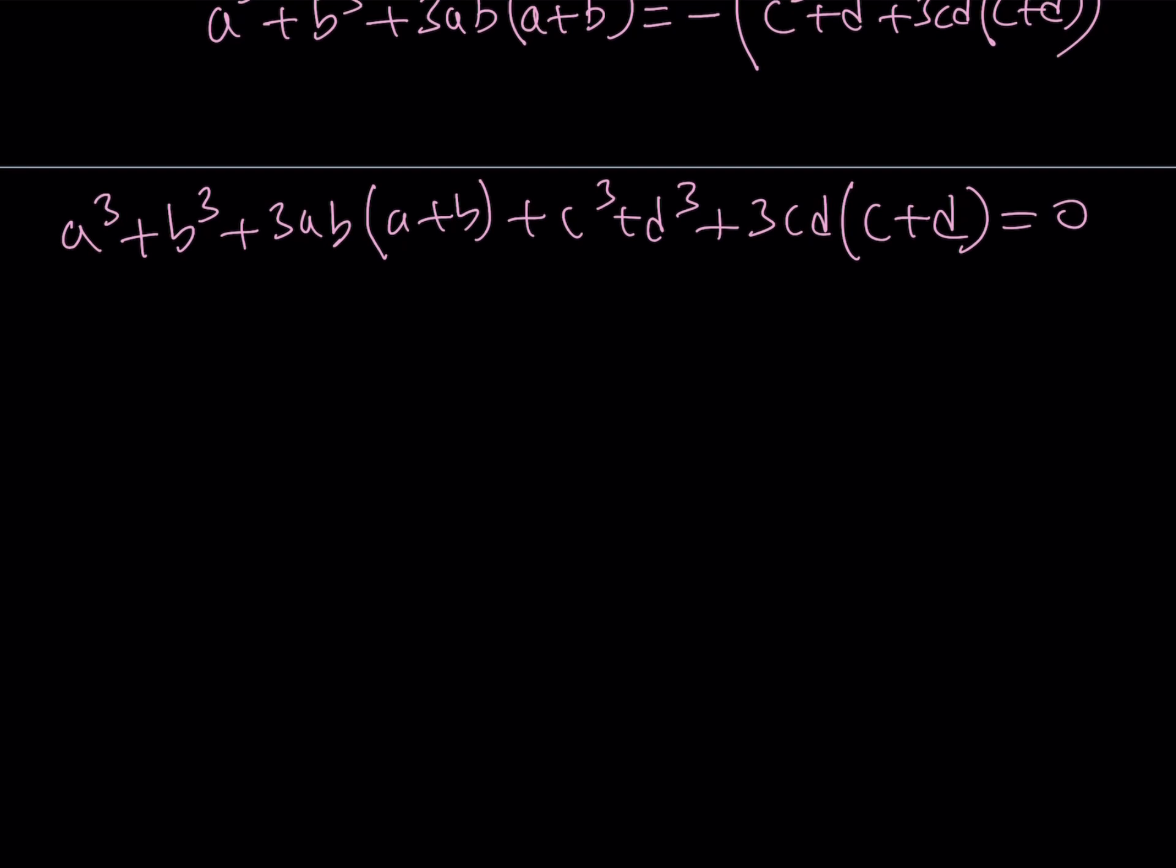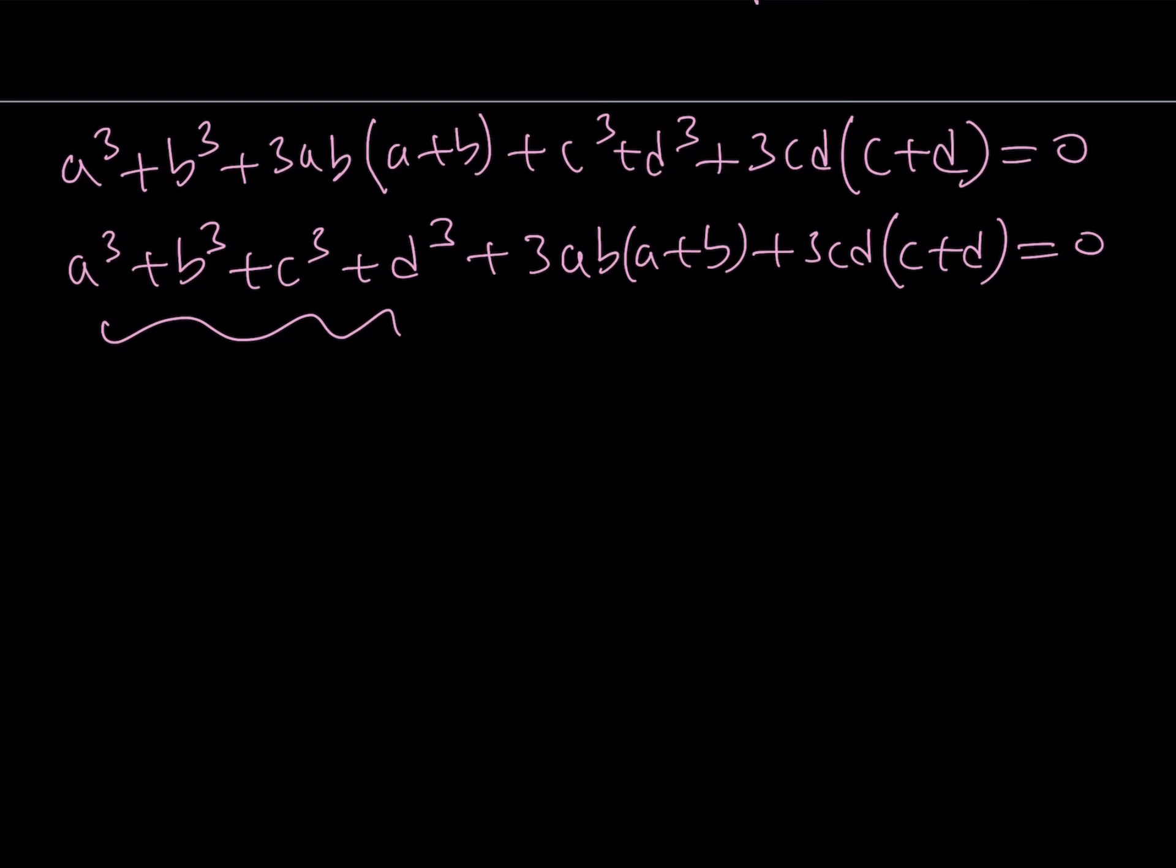Now here, putting the A cubed plus B cubed plus C cubed plus D cubed together, obviously. But also, I want to be able to put these two things together. So 3AB, A plus B, 3CD, C plus D. Since they have a common factor, they should be together. I got this part in my expression, so I'm going to leave it as is. But I will work on the part that has the 3 in the front.